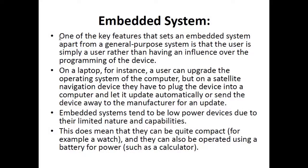One of the key features that sets an embedded system apart from a general purpose system is that the user is simply a user, rather than having influence over the programming of the device. When using a laptop or computer, you are able to modify, install, and delete different software and applications, and make changes to Windows settings. Whereas with an embedded system, you cannot alter the software of your microwave, digital watch, or smartwatch.